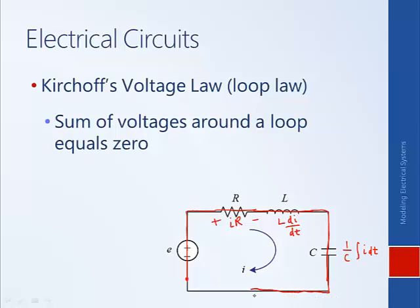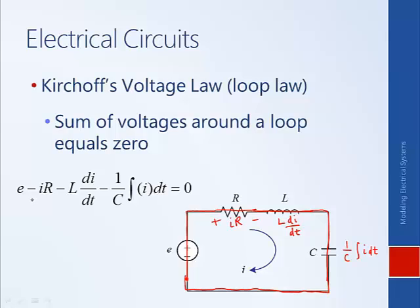At this point we are back to where we started, so the total change in voltage must be zero. Written as an equation: we gain E across the voltage source, then drop IR across the resistor, then drop L dI/dt across the inductor, then drop the capacitor term. The total sum equals zero, since we have returned to our starting point.